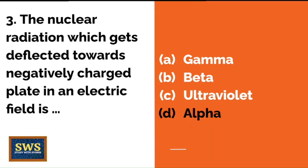The nuclear radiation which gets deflected towards the negatively charged plate in an electric field is gamma, beta, ultraviolet, or alpha? The correct option is D — alpha.